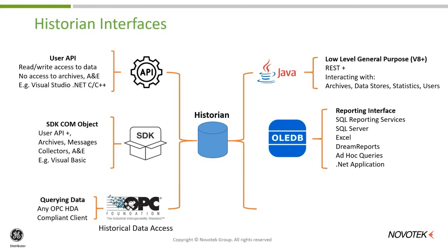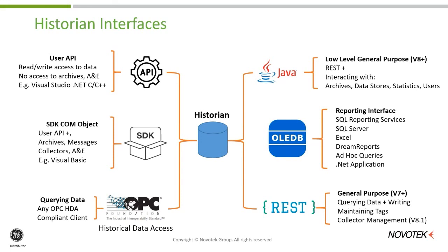What OLEDB doesn't allow you to do is insert or update data — it's purely data retrieval. Now let's turn our attention to the newer REST APIs. These became available with historian version 7 and have been extensively upgraded from version 7 up to version 8.1.